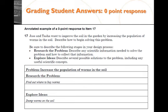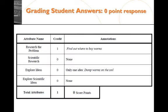The zero-point response has very little content. Only the first point was considered, but finding out where to buy worms isn't a scientific response — you could buy worms all day long without doing science. The real question is how you can sustain worms living in a particular area, which would then benefit the plants you're trying to grow. In the last three attributes, no points were earned because there wasn't enough content given. We're really looking for: what is the problem, what needs to be researched to create a solution, what ideas relate to that solution, and how can they be connected to a scientific concept.